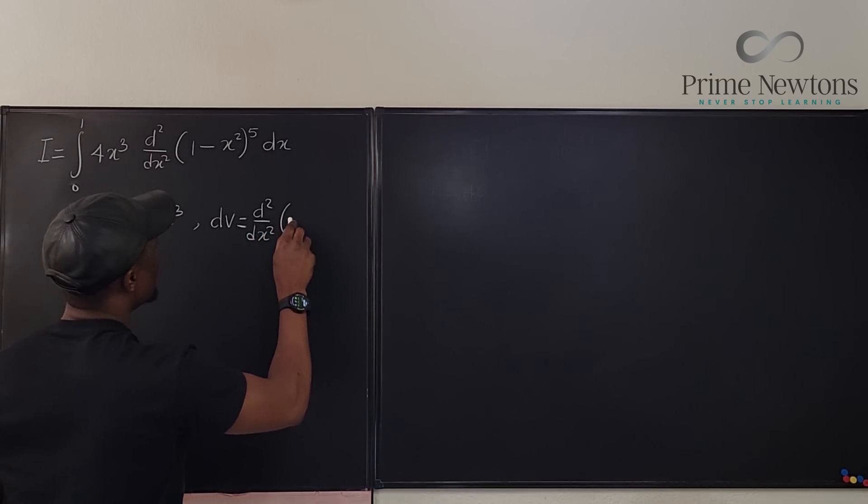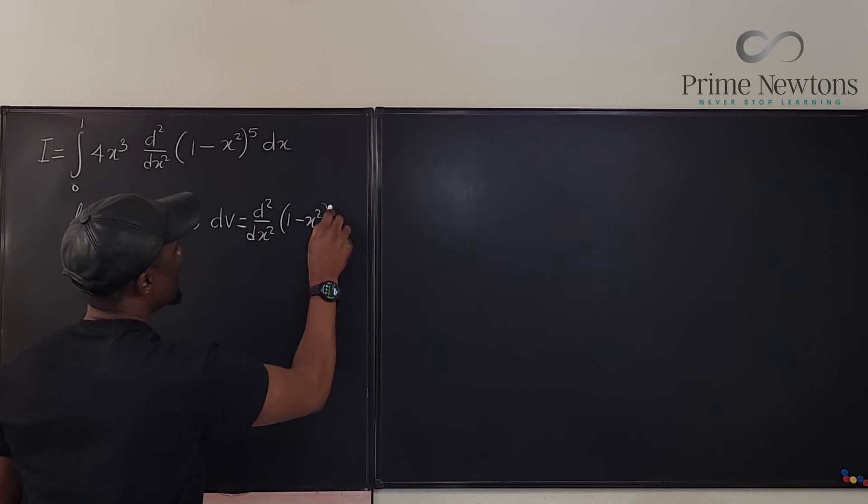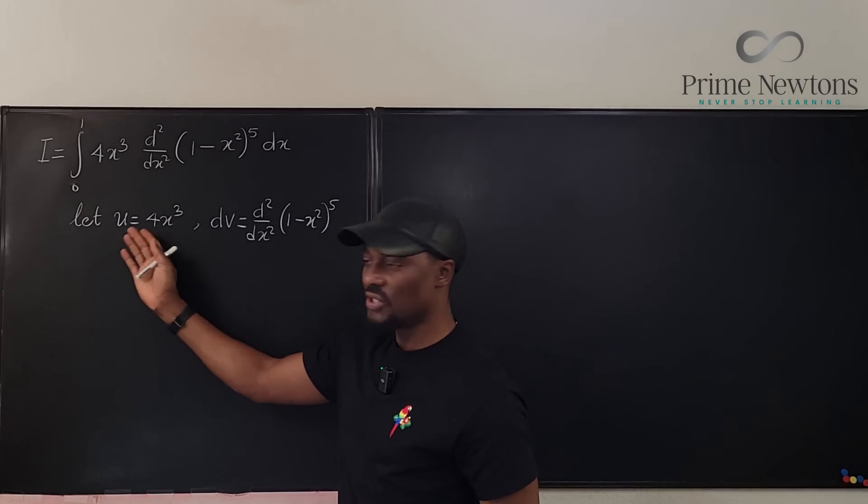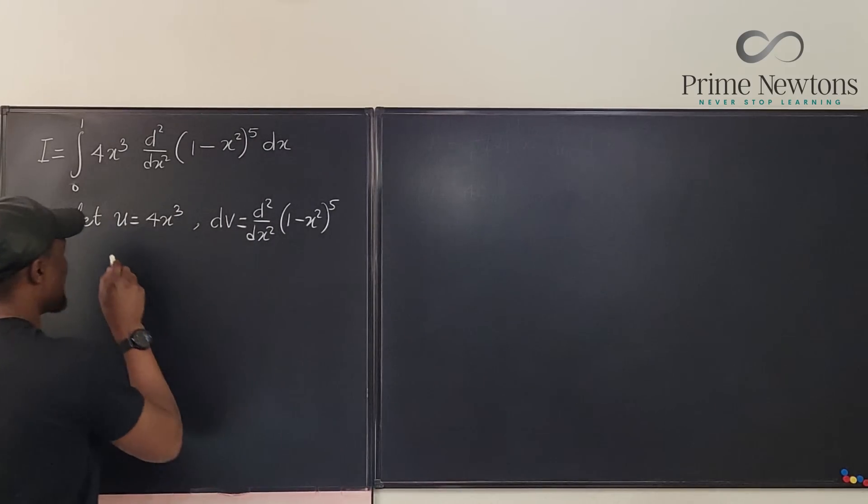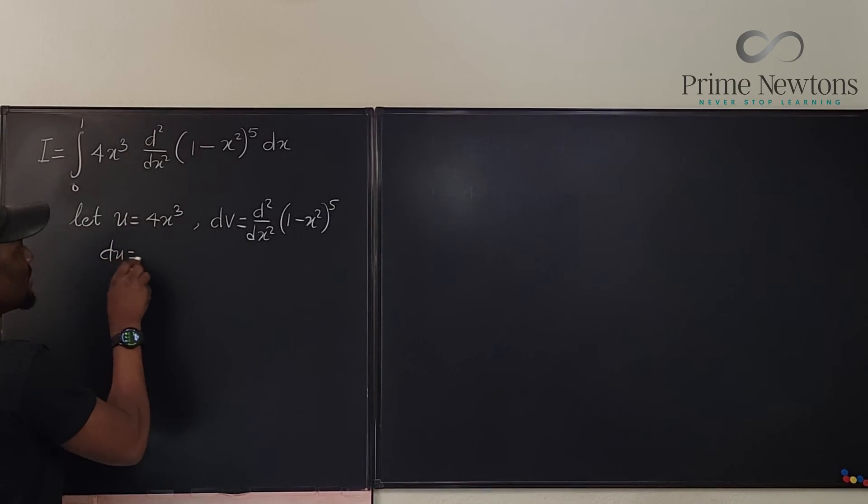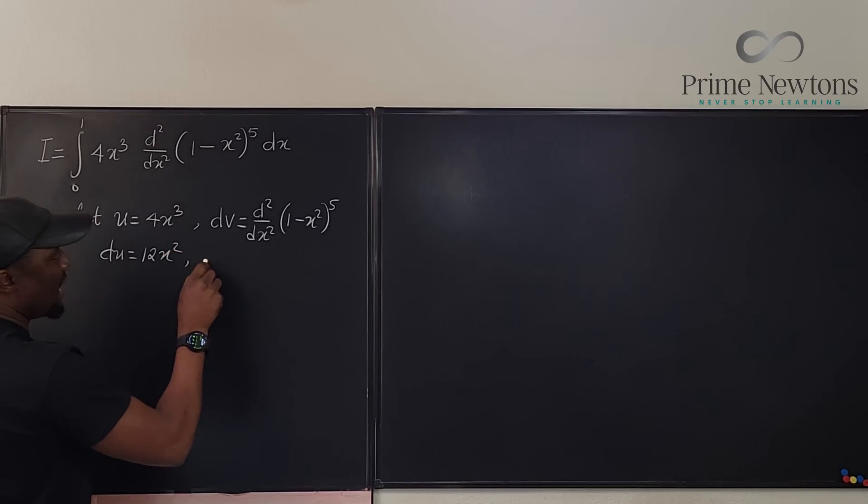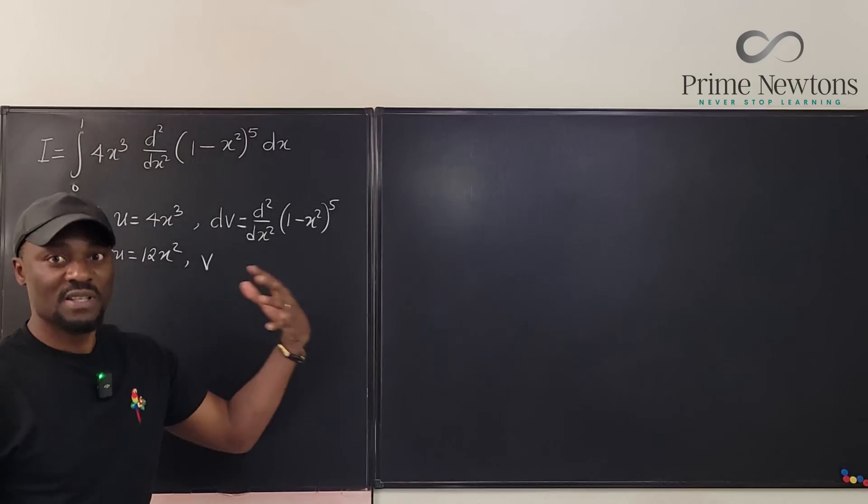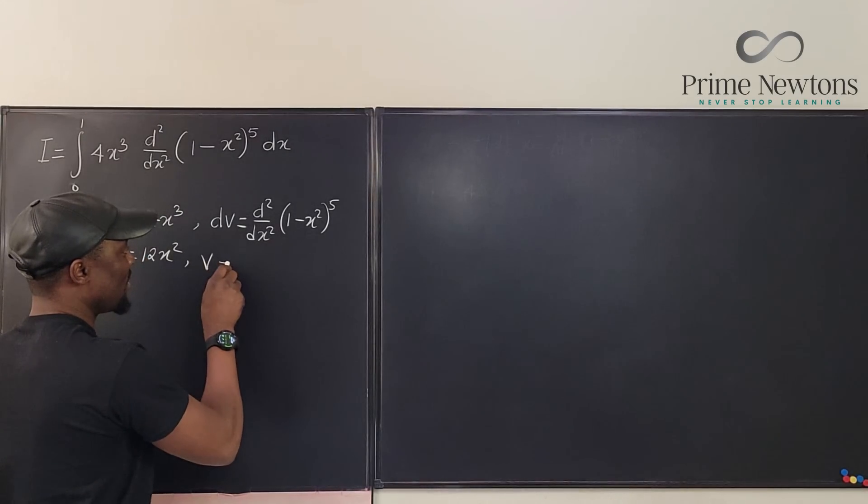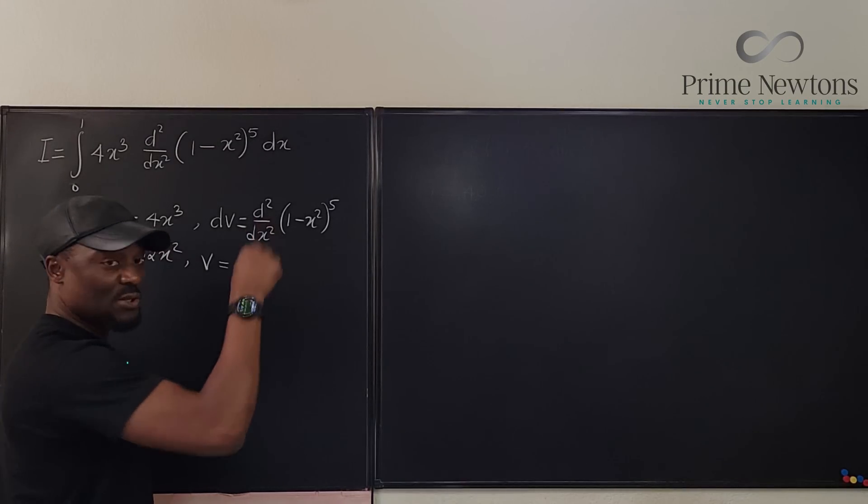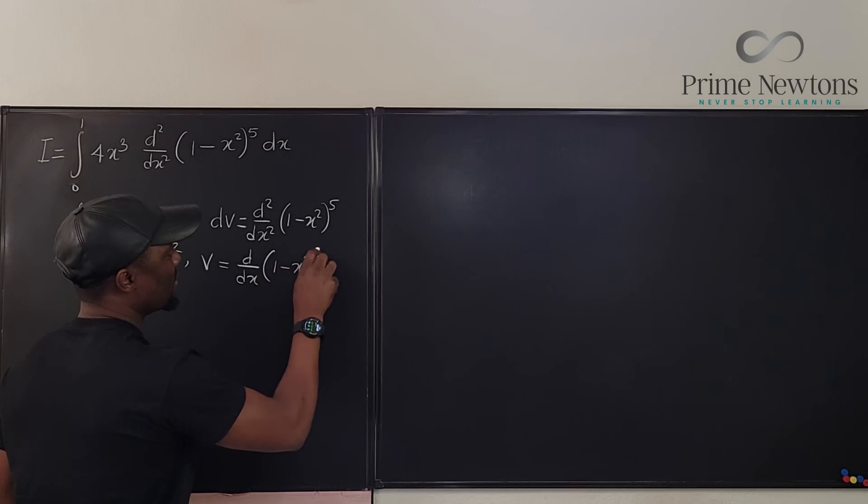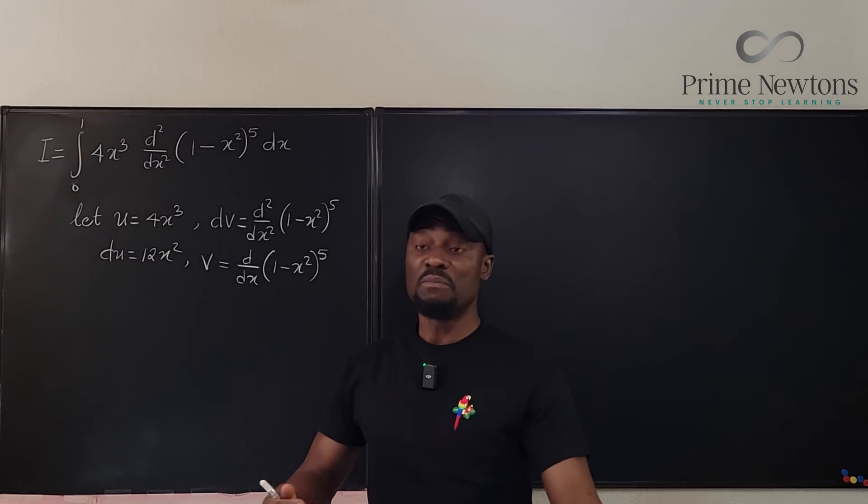And then I'm going to say let dv be d2 dx squared of 1 minus x squared to the fifth. So I got these two guys I need to differentiate this I need to integrate this. Differentiating this makes my life easy. du is going to be 12x squared and then v will be the integral. Now integrating this is just removing one of the derivatives so this is going to be just d dx of 1 minus x squared to the fifth.